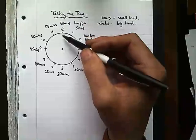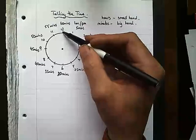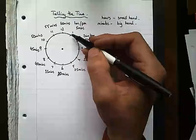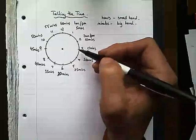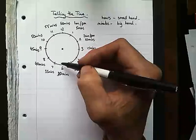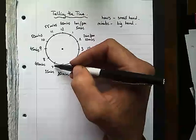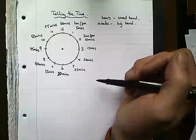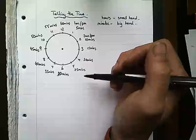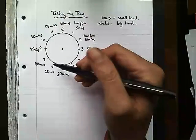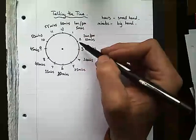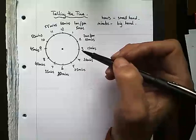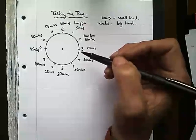Whenever you get to the hour - whenever the big hand is on twelve - your little hand will be pointing directly at one of the numbers, and that tells you what time it is: one o'clock, seven o'clock, ten o'clock. It could be a.m. or p.m. The problem with a 12-hour clock is it only tells you for 12 hours and we have 24 hours in a day, so we use a 24-hour clock.